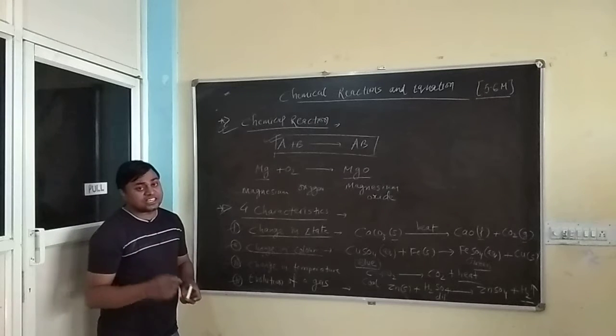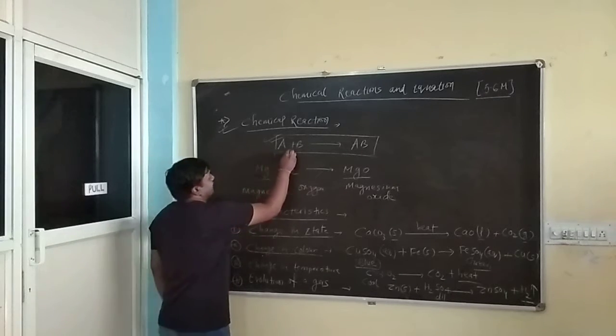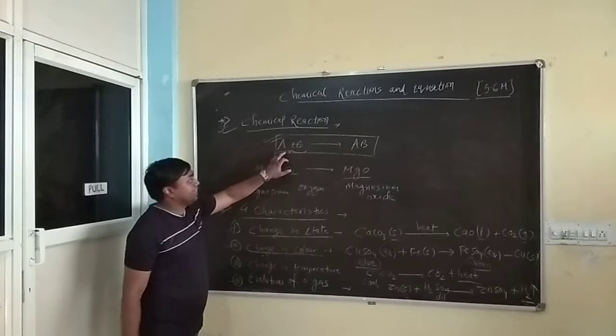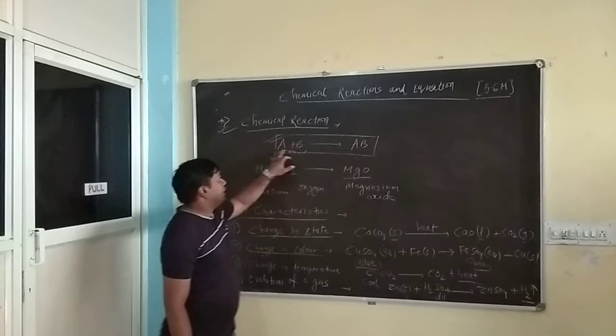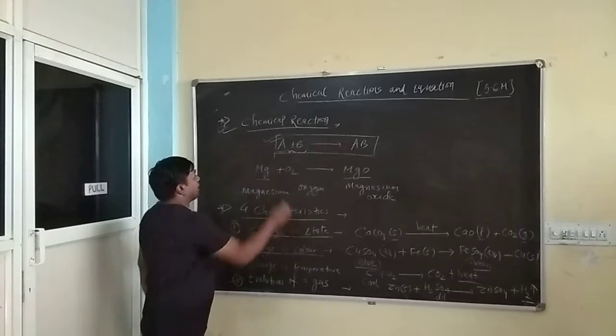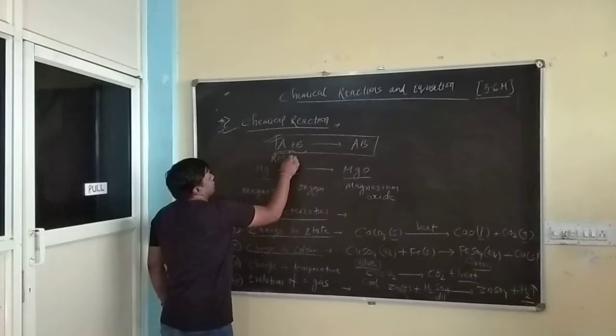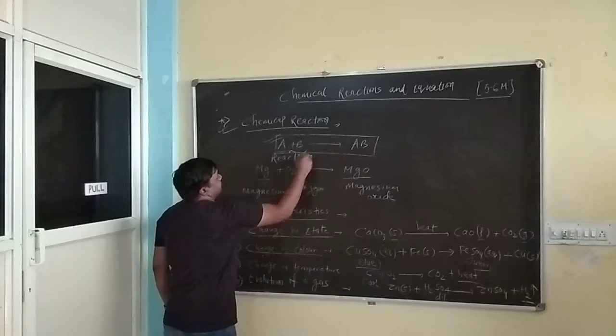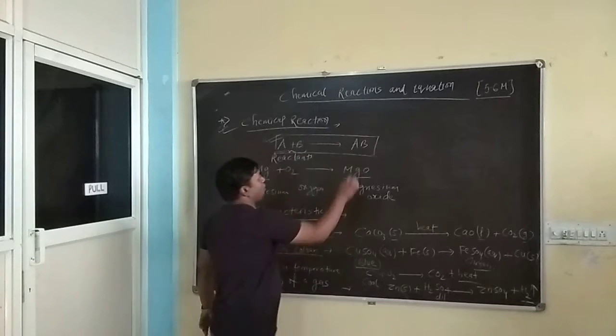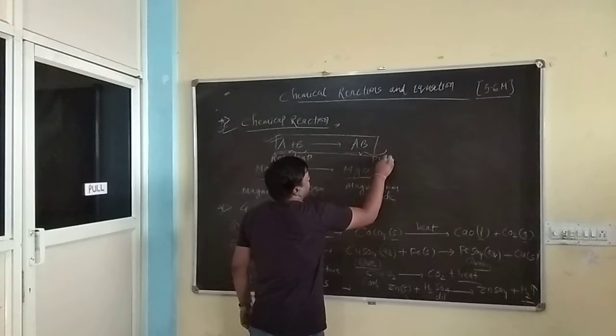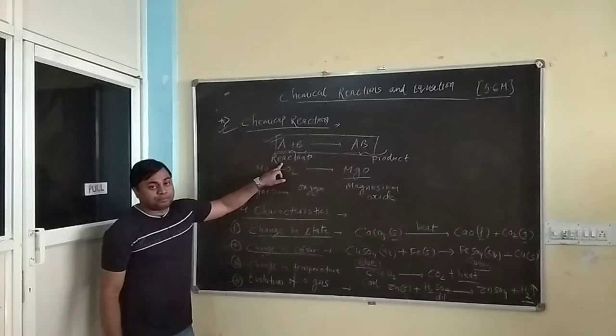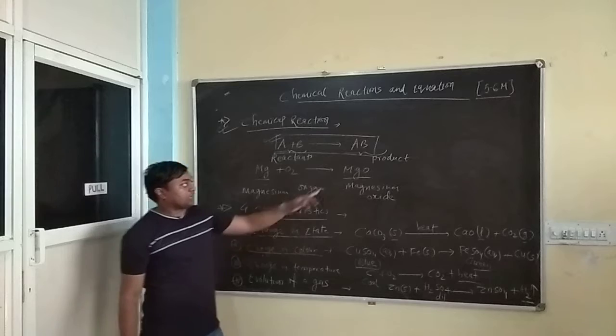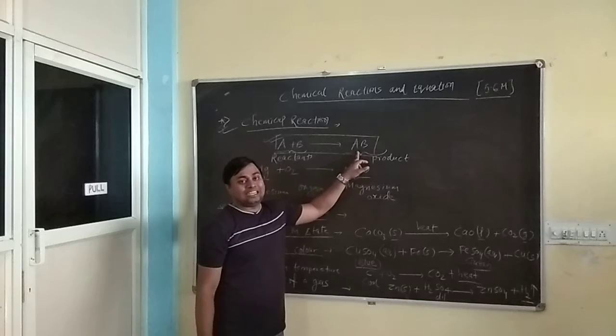The substances which generally combine is called as reactant. For example I have taken A plus B is combining to form AB. So here A and B which is combining is called as reactants. And the new substance which is formed is called as product. So reactants are generally present on the left hand side, products are available generally on the right hand side.